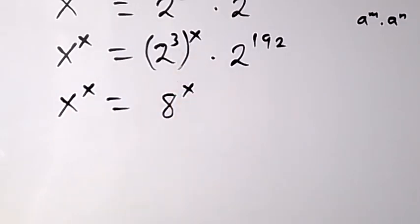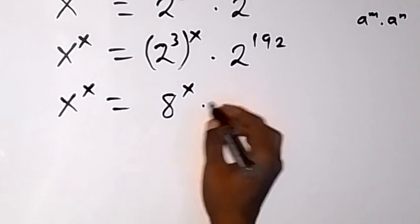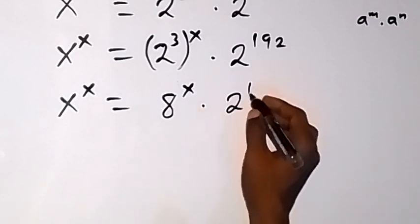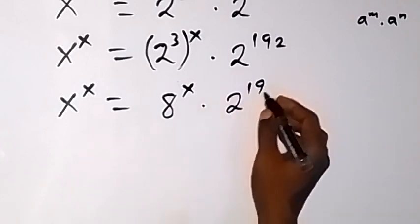Now, 2 raised to power 3 is 8. Then multiply by 2 raised to power 192.